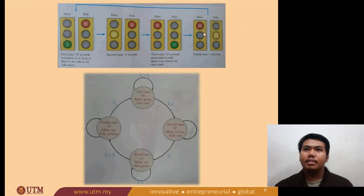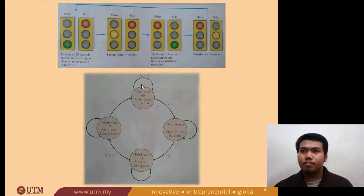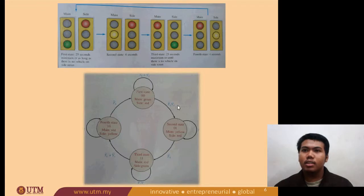This is the state diagram. The first stage: main is green and side is red. This stage is expressed as TL plus VS bar, where TL is the long timer and VS stands for vehicle sensor. At this stage, the minimum time is 25 seconds, or as long as there is no vehicle at the side street. However, when the time is more than 25 seconds and there is a vehicle at the side street, the system will go to the second stage, and this condition is expressed as TL bar VS.